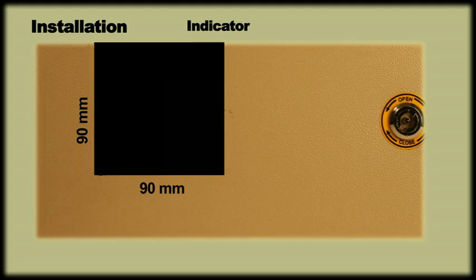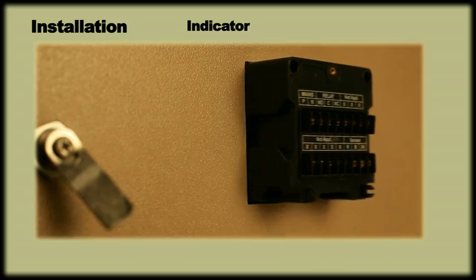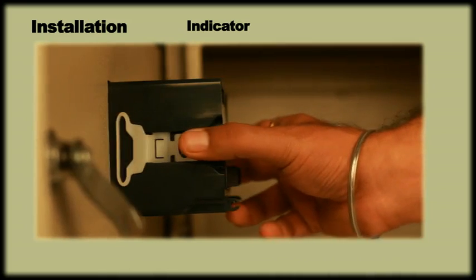For panel mounting, make a 90 mm by 90 mm cutout in your panel plate. Slide the meter in and fit it with a side clip to lock it.